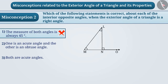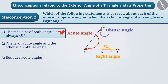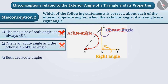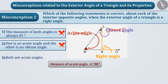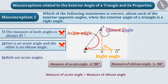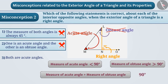Some students also believe that when the exterior angle of a triangle is a right angle, one of the interior opposite angles is an acute angle and the other is an obtuse angle. But this is not possible, so option 2 is also an incorrect answer. An acute angle measures less than 90 degrees and an obtuse angle measures greater than 90 degrees — if we add them, the total will be more than 90 degrees. Therefore, when the exterior angle is a right angle, the interior opposite angles cannot be one acute and one obtuse.